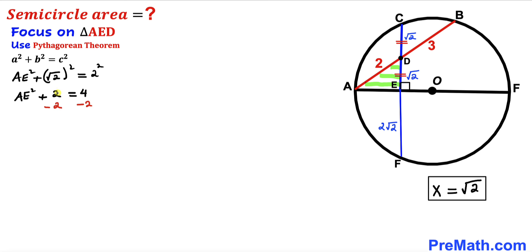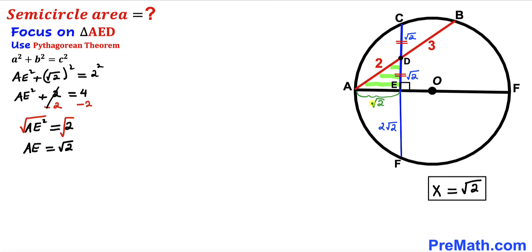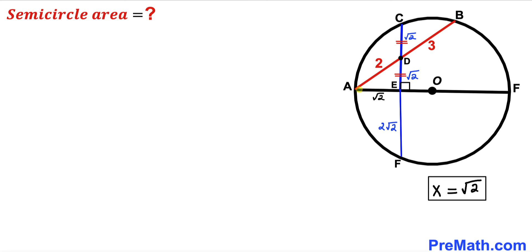Simplifying: AE squared plus 2 equals 4. Subtracting 2 from both sides gives AE squared equals 2. Taking the square root of both sides, our AE length turns out to be the square root of 2.